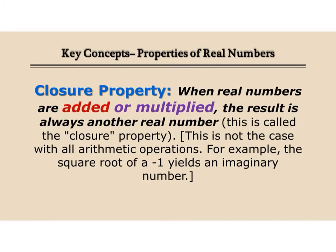The closure property says when you take two real numbers and you add them or multiply them, the answer is a real number. The one example of when it's not is if you take the square root of negative 1 — you get an imaginary number. We'll be looking at imaginary numbers a little later on.